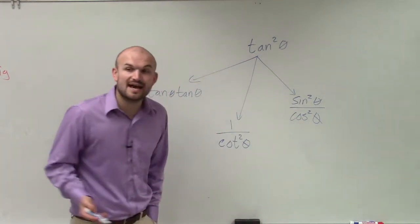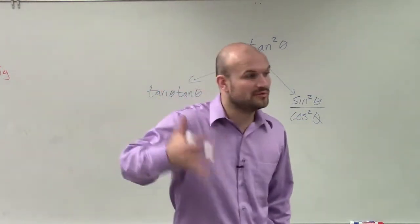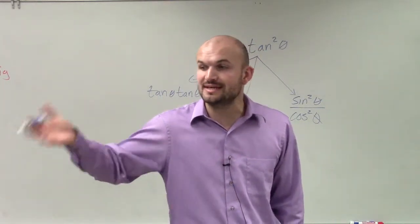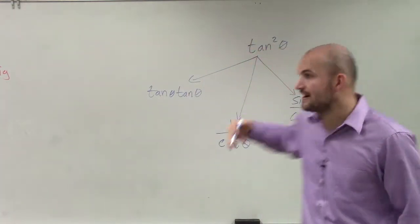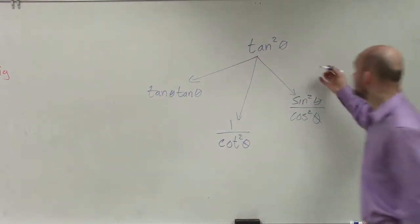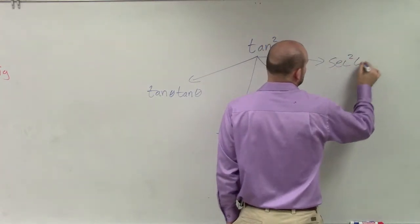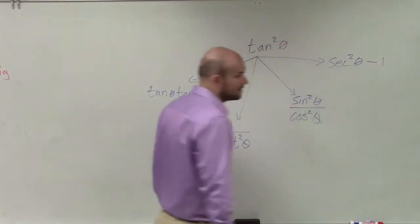Yeah, because remember, the Pythagorean identity says one plus tangent squared equals secant squared. So if I just subtract the one to the other side, I can also say tangent squared is going to equal secant squared of theta minus one.